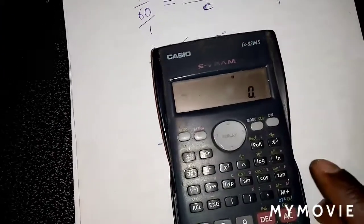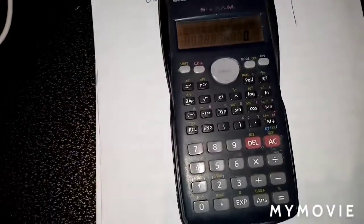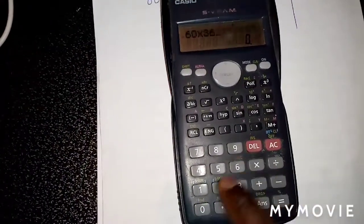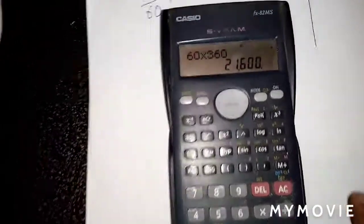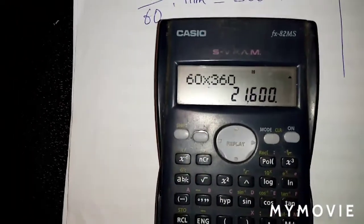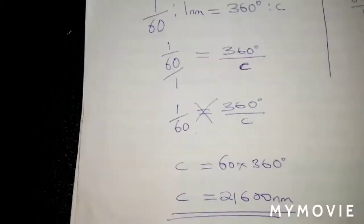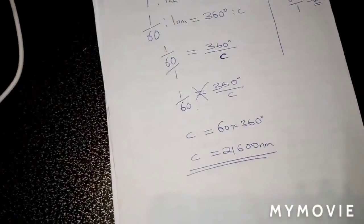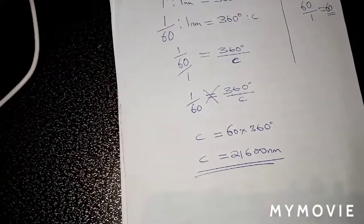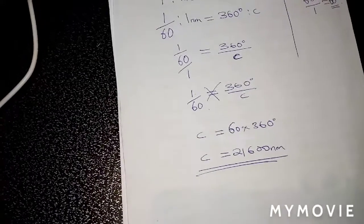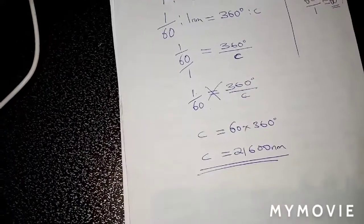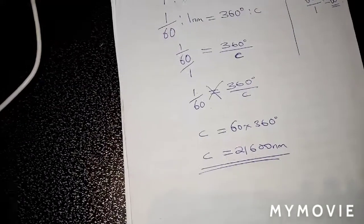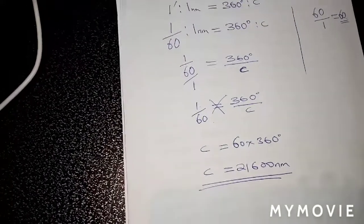On my calculator I'm going to punch 60 by 360 degrees, which gives me 21,600. So that is how you can show it if you've been asked to show the circumference of a circle of latitude to be 21,600.